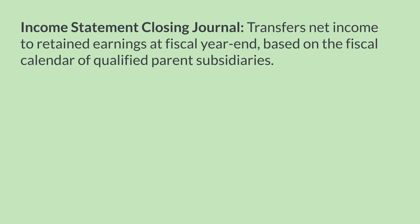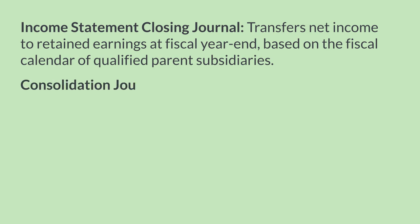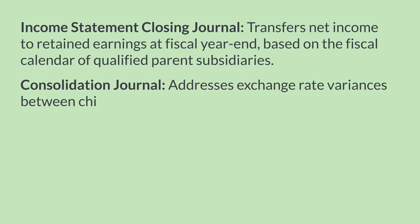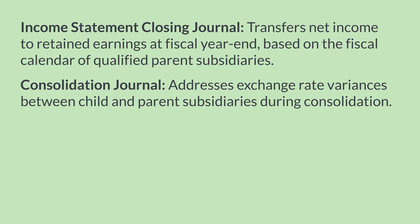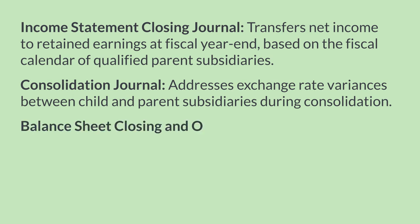The income statement closing journal is determined by the fiscal calendar for any qualified parent subsidiaries, and not for the fiscal calendars of child subsidiaries. Second, there's the consolidation journal — this journal entry type consolidates exchange rate variances between child subsidiaries and their parent subsidiaries.